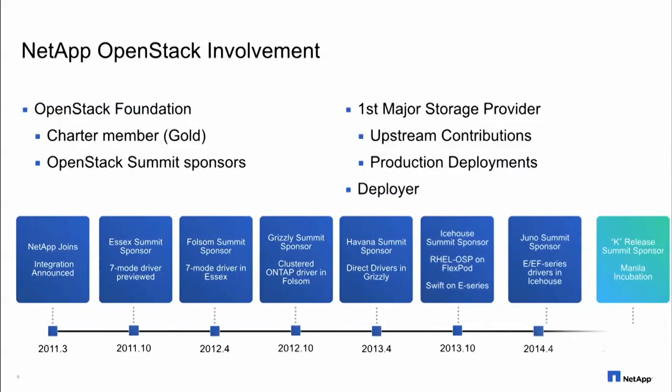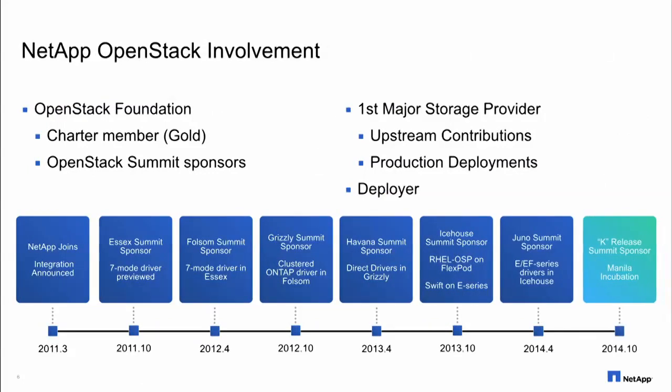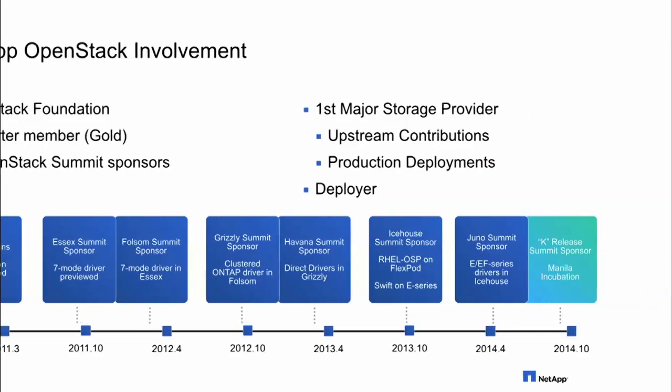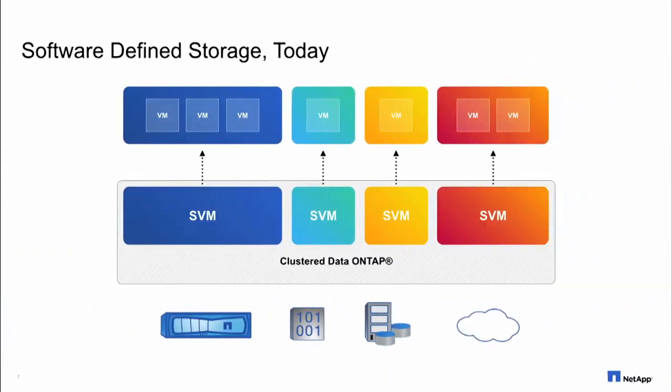We've been at this for a while. Our first integrations debuted in the Essex release, and we've iterated and successively expanded. Here in Icehouse we debuted support for an entirely new platform — our E and EF Series, an all-flash version of our E Series systems. Clustered ONTAP is a programmable capability resident in many different modalities: on-prem private cloud, sitting in front of foreign storage, or increasingly as an endpoint at hyperscale providers.